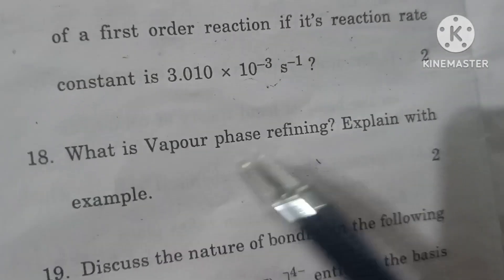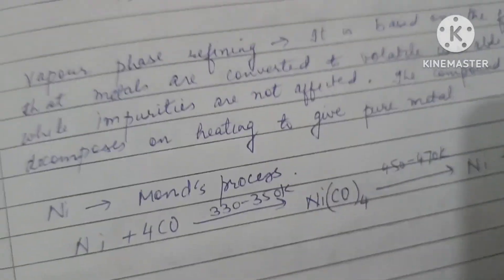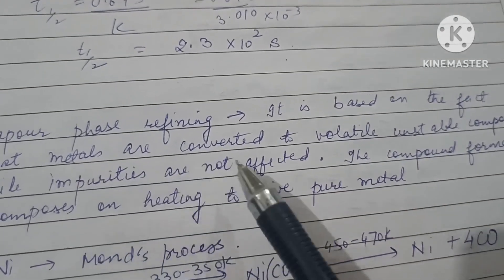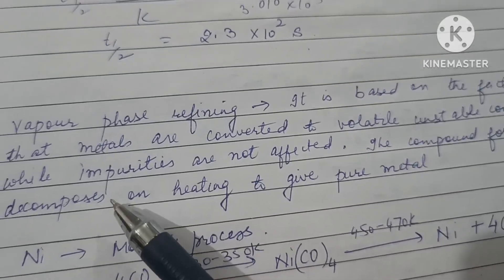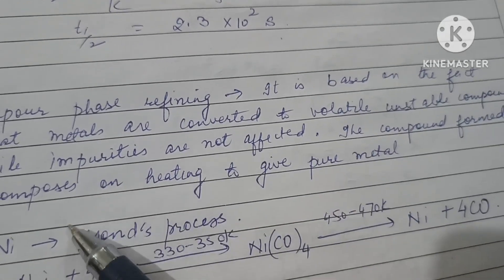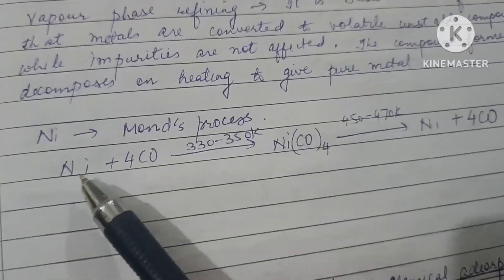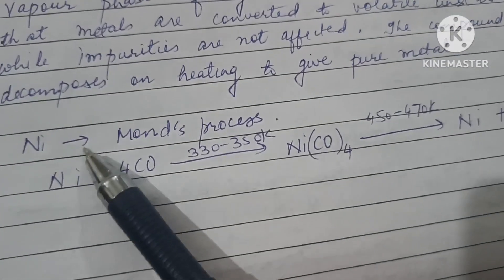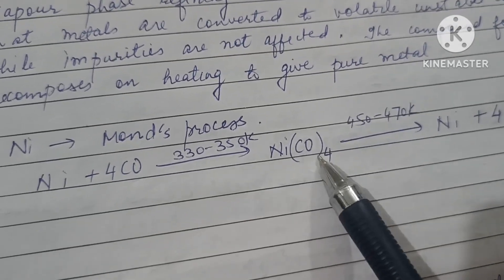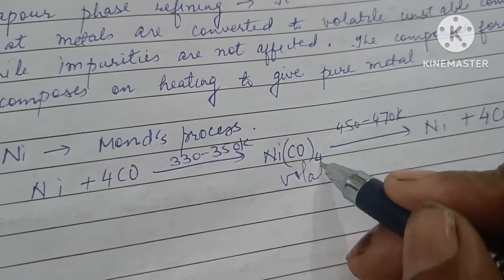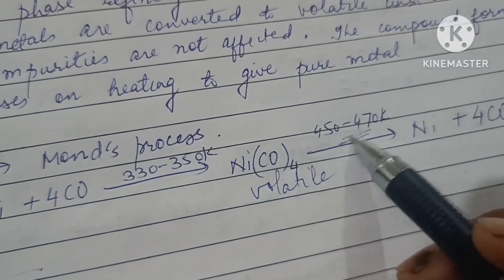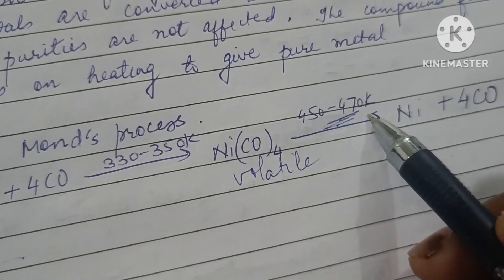What is vapor phase refining? Explain with an example. Vapor phase refining is based on the fact that metals are converted to volatile unstable compounds while impurities are not affected. The compound formed on heating decomposes to give pure metal. For example, nickel is refined by Mond's process. It's heated with carbon monoxide to form tetracarbonyl nickel which is volatile. This moves away while impurities are left behind. On further heating to 450 to 470 kelvin, it breaks into nickel and carbon monoxide.